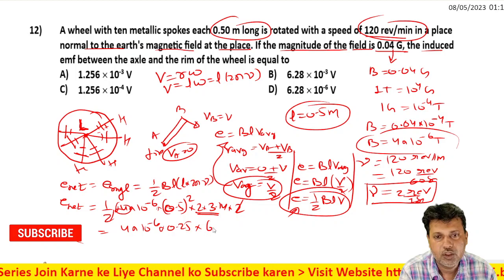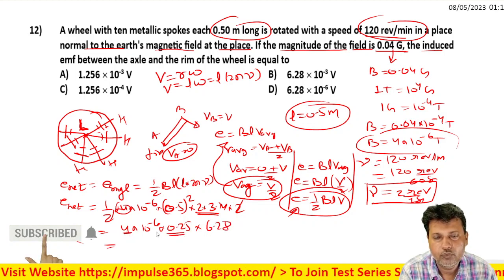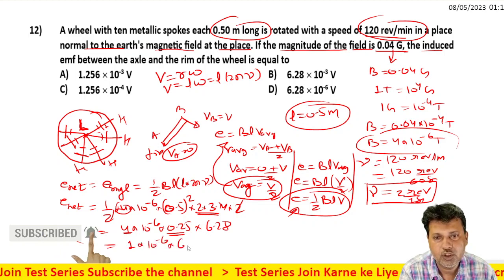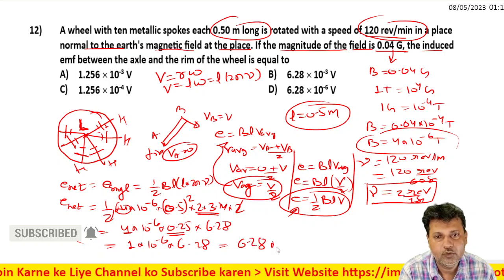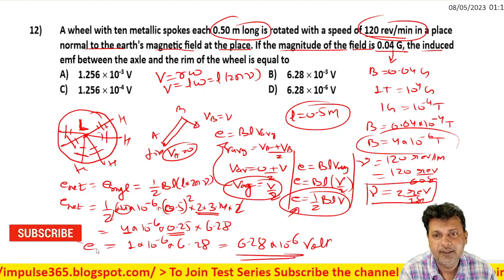0.5 into 6.28, then 0.25, and finally 4 into 1 into 10 to the power minus 6. This gives 6.28 into 10 to the power minus 6 volts.